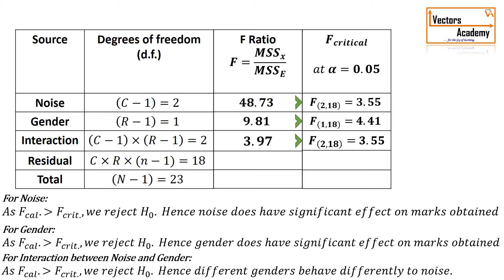However, these results might change if we change the value of alpha or the significance level. This is how a two-way ANOVA is calculated.